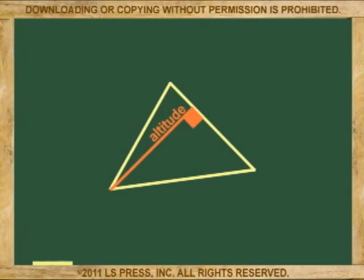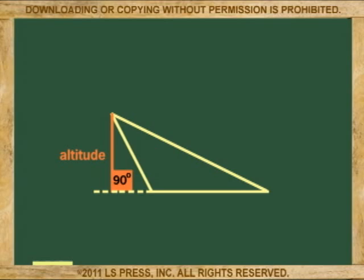The altitude, on the other hand, is the perpendicular distance from any vertex to the opposite side, or extension of the opposite side.